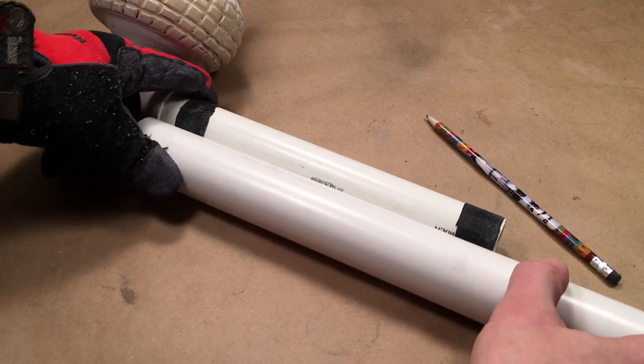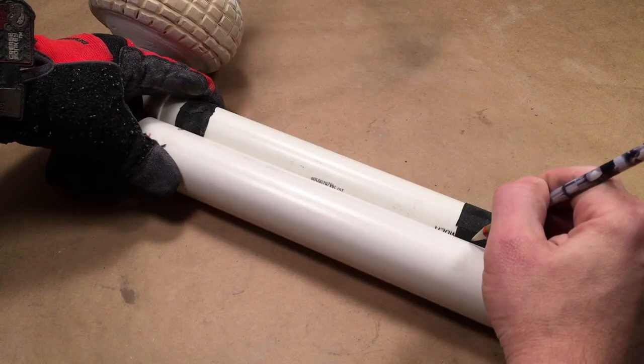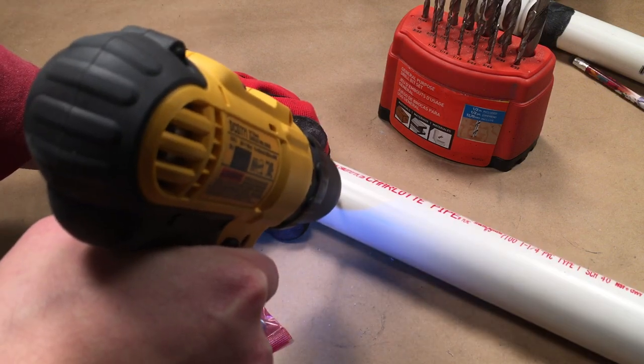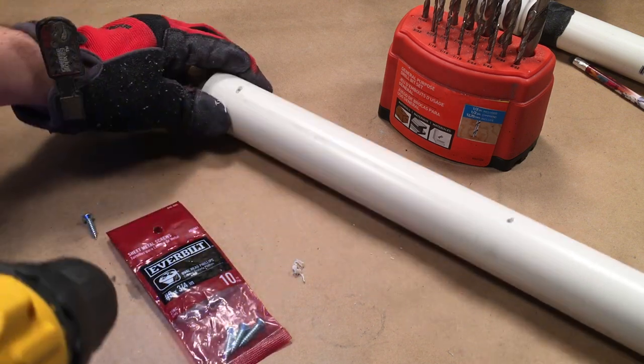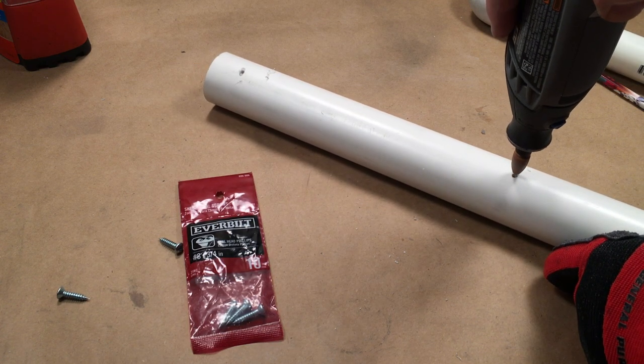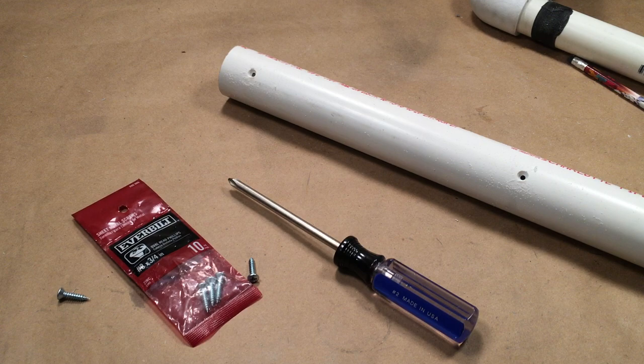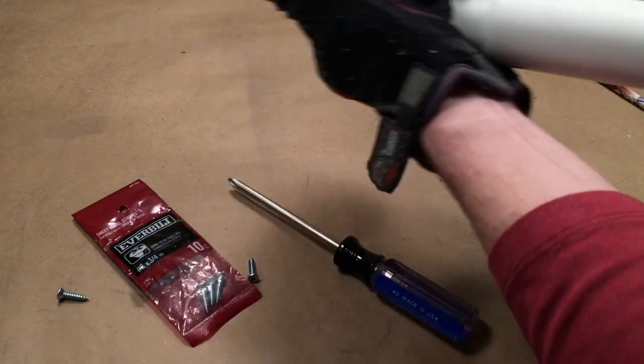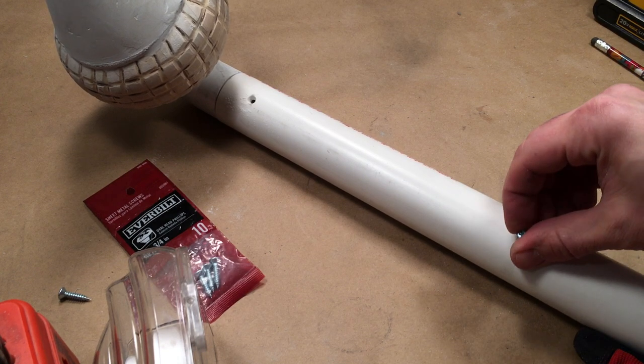Line up the pineapple assembly with the one and one quarter inch PVC. Mark the locations of the friction tape on the one and one quarter inch PVC pipe. Drill the marks with a 3/32nd inch bit. Using a cone bit on the Dremel, sand out the holes to countersink the number eight screws. Insert the pineapple assembly into the one and one quarter inch PVC pipe. Secure with number eight by three quarter inch sheet metal or wood screws.